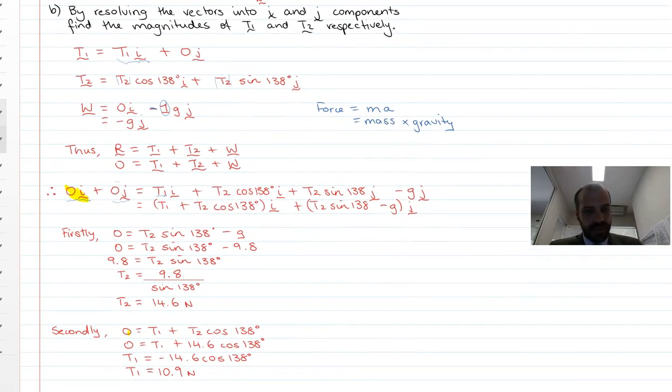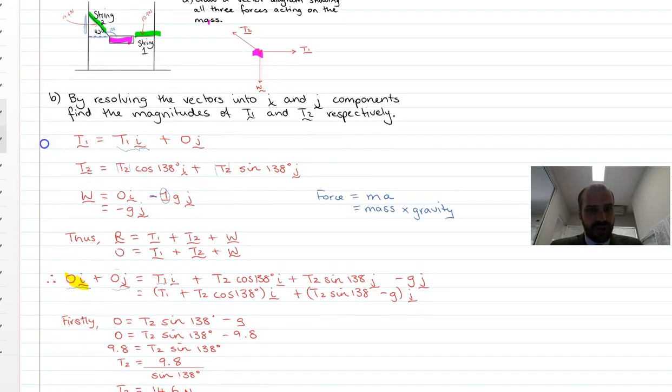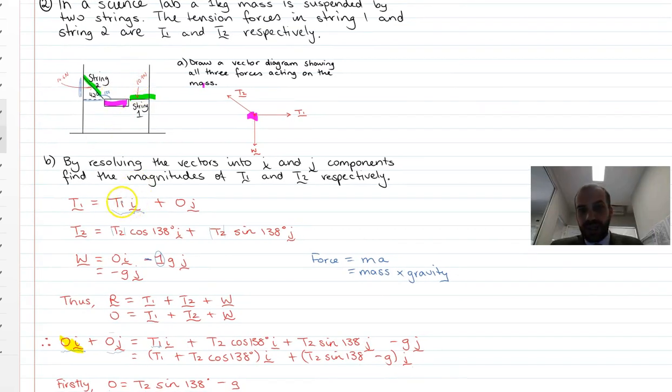Alright. So what do we know so far? Let's look back at what we had. Tension 1 equals tension 1 in the i component plus that. But now we know that this first vector is simply 10.9i. Looking at this next one, we know that tension 2 equals tension 2 cos 138i. So we know what tension 2 is, 14.6. So we can put 14.6 into here and here, and we'll know what our tension 2 vector is in terms of i and j components. And finally, we always knew about this weight component. It's simply negative g. Okay.